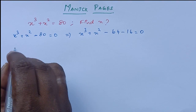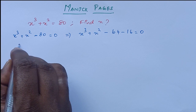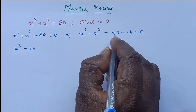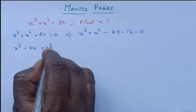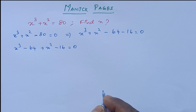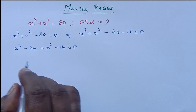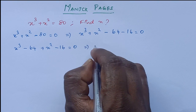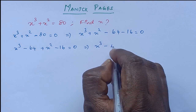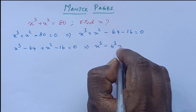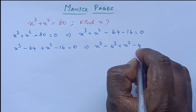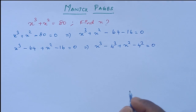So now this is nothing but x cube minus 64. I change the position: x square minus 16, which is equal to 0. Now again this we can write like x cube minus 64 is nothing but 4 cube, plus x square minus 16, which is nothing but 4 square, equal to 0.